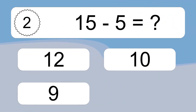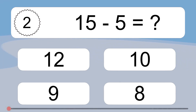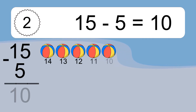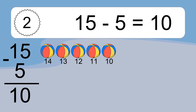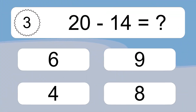15 minus 5 equals what? 15 minus 5 equals 10. Let's count it. 14, 13, 12, 11, 10.